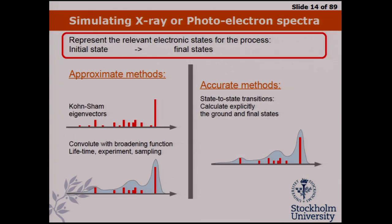The kind of information we get out is the energies and the transition moments — this gives us a stick spectrum. Whenever we compare to experiment, we have to take into account the lifetime broadening and all kinds of dynamic effects contributing to broadening, done on different levels of accuracy depending on what we compare to. Whether you use approximate methods with Kohn-Sham molecular orbitals or state-to-state transitions, we get a peak spectrum in both cases and can treat them very similarly.